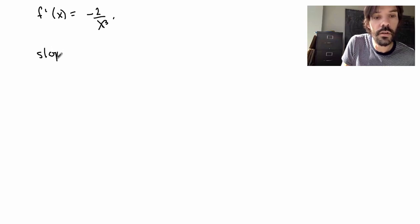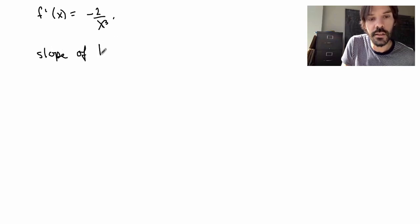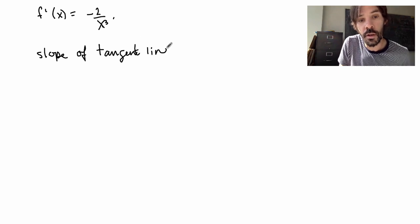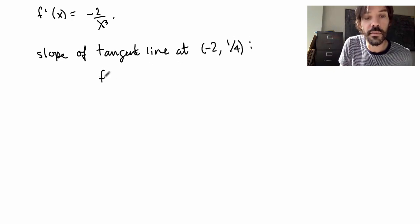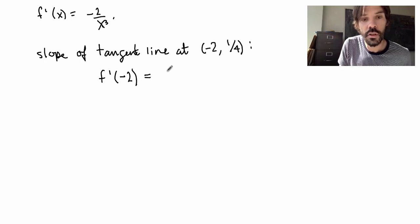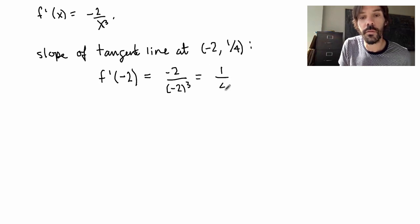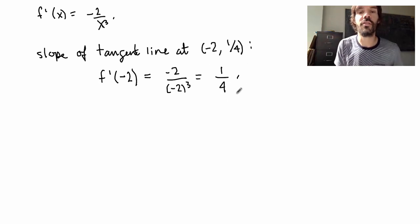So what is the slope of the tangent line at the point that I'm interested in? So recall that the point I'm interested in is minus 2 one-fourth. Well, the slope is given by just evaluating the derivative at the point x equals minus 2. So I get minus 2 over minus 2 cubed, which is really just 1 over 4. Aha! That's what I told you you would get. Great!